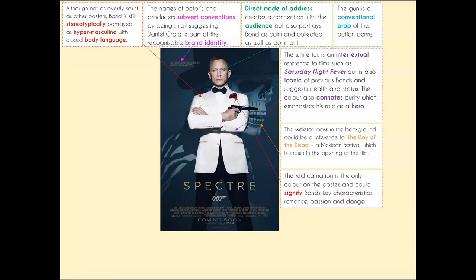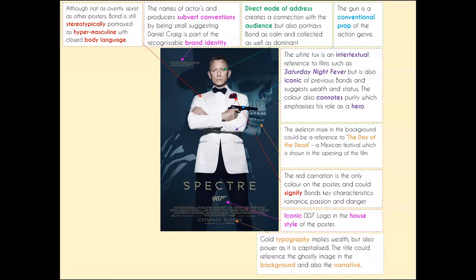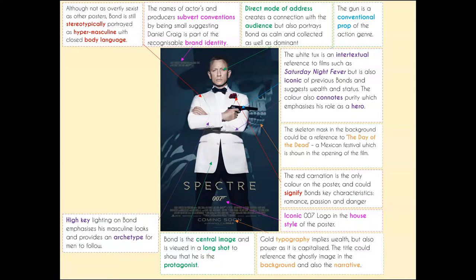We have a pop of color through the carnation on Bond's tuxedo, which signifies romance — as we'd expect as part of the subplot — as well as passion and danger. The iconic 007 logo is in the shape of a gun and is part of the house style of the poster. We've got gold typography which links to wealth and power, and it's all capitalized. The title 'Spectre' references that ghostly background image and gives us a little information about the narrative while keeping things enigmatic. Bond is the central image, viewed in a long shot to show he's the protagonist, right in the center of the rule of thirds, also lit with high key lighting that emphasizes his masculine looks, acting as a sort of archetype for men.